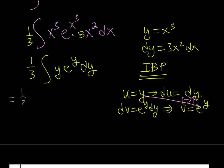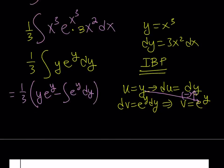So, this is going to equal one-third of u times v. u times v is y times e to the power y minus the integral of v times du, which is e to the power y dy. The integral of e to the power y is fairly simple. This is going to give us one over three times y e to the power y minus e to the power y. And, at the end, we can attach our constant.